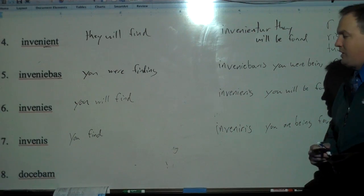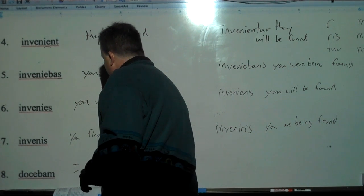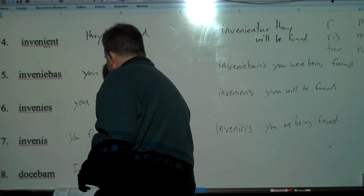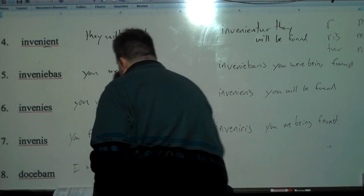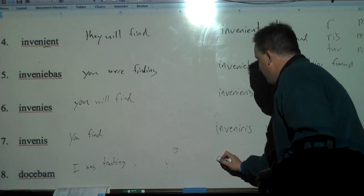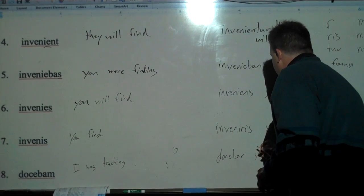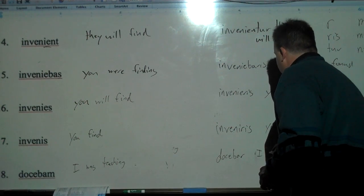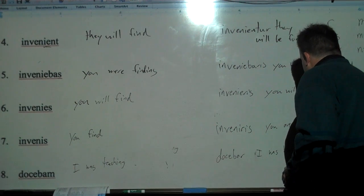Now we're switching to doceo. Dokebam. I. B-A was. It's imperfect. I was teaching. And then we take the bam off and we go dokebar. I was being found. Now we're going to scroll down.